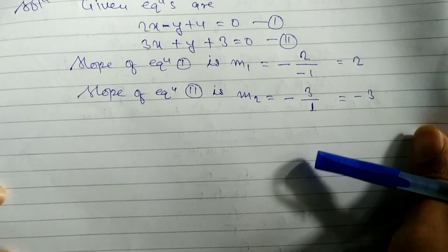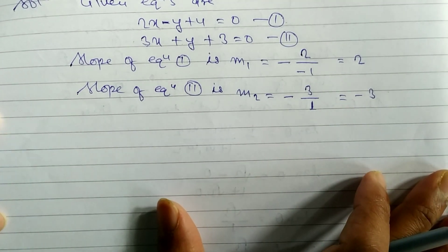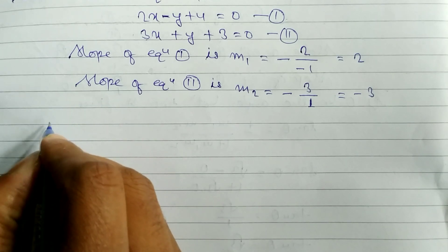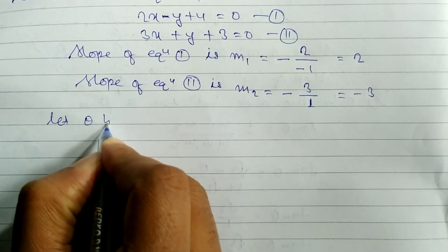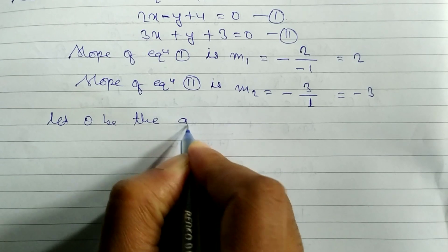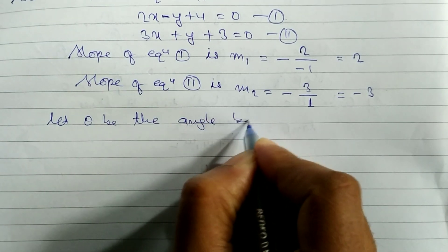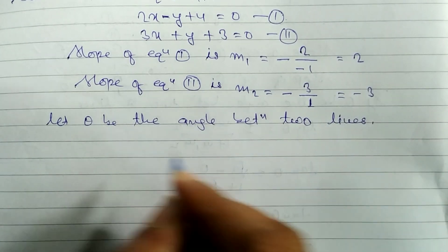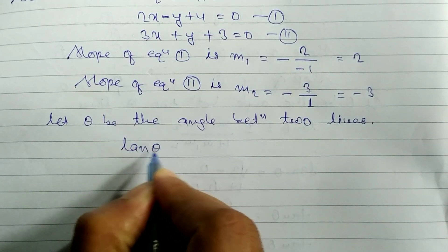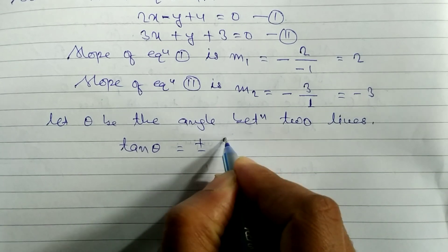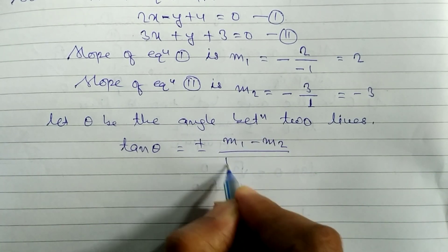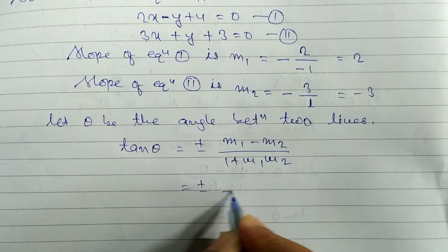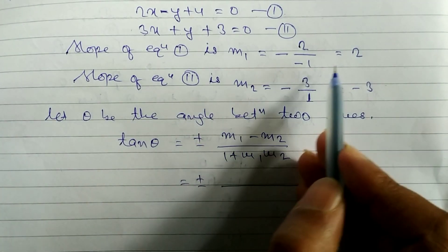Now we find the obtuse angle. Obtuse angle means more than 90 and less than 180 degrees, which means it is in the second quadrant — and in the second quadrant, tan is negative. Let theta be the angle between two straight lines. The formula is: tan theta equals plus or minus (m1 minus m2) divided by (1 plus m1 times m2).